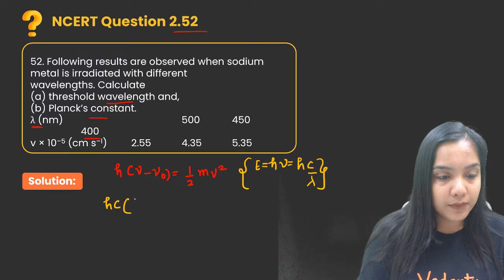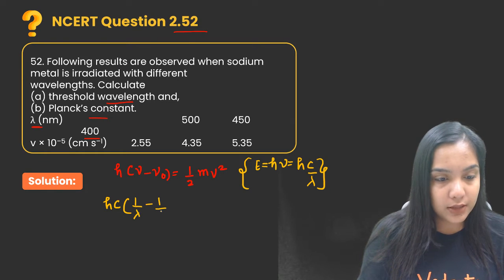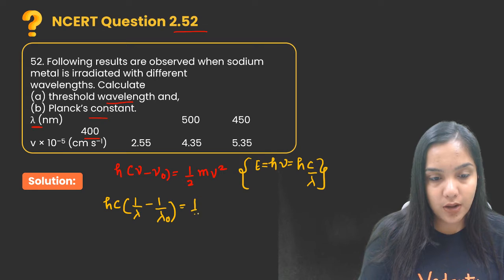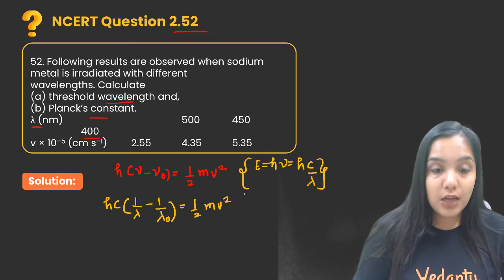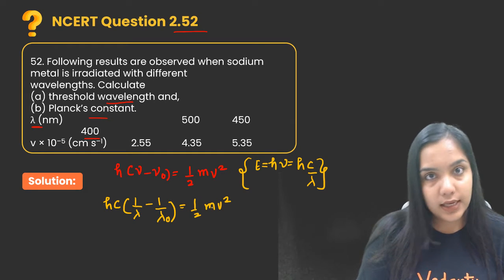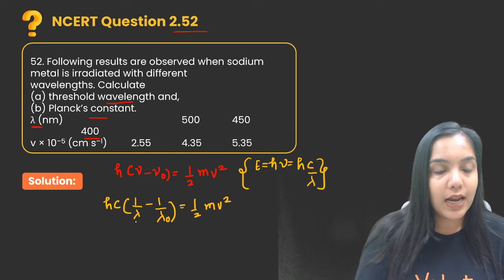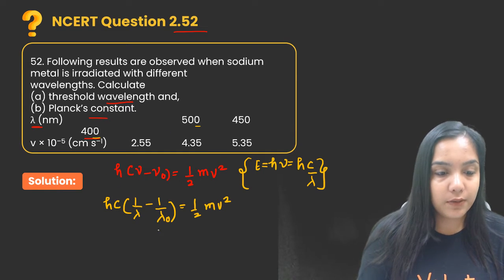Equal to half mv square. Now v value has been provided, m value we know because it's electron, and lambda value is given. We need to find this lambda naught value, so one by one for each section we will put it.